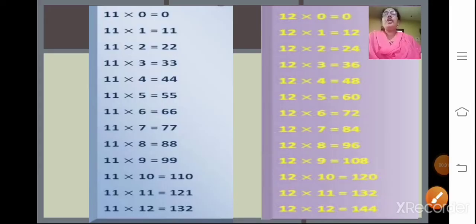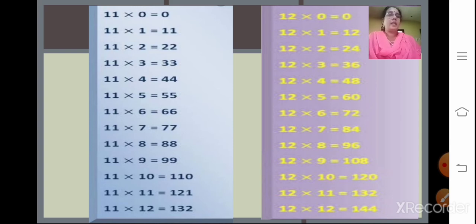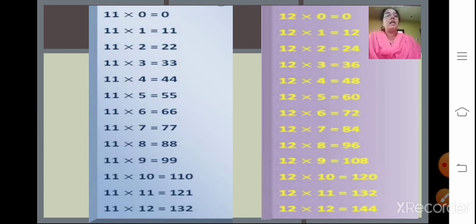In the last class I told you to learn and revise the tables from 1 to 10. Today we will do the tables from 11 to 15. I will read them out and you repeat along with me. Table of 11: 11 zeros are 0, 11 ones are 11, 11 twos are 22, 11 threes are 33, 11 fours are 44, 11 fives are 55, 11 sixes are 66, 11 sevens are 77, 11 eights are 88, 11 nines are 99, 11 tens are 110, 11 elevens are 121, and 11 twelves are 132.